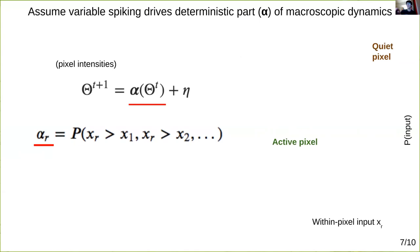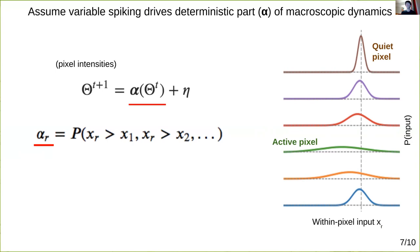So precisely at a given time, a neuron's inputs from its own pixel are Gaussian with a mean and variance depending on the number of active neurons in the pixel. Quiet pixels have narrower distributions, whereas active pixels have wider ones.